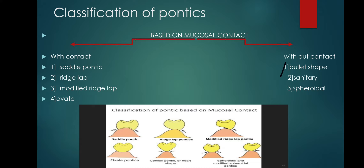Pontics without mucosal contact include bullet-shaped pontics, also called conical pontics or heart-shaped pontics. They have three names: bullet-shaped, conical, and heart-shaped. They are very easy to clean and maintain, but aesthetics are very poor. Therefore, they are used in areas where aesthetics are not a priority — specifically mandibular and maxillary posterior teeth.